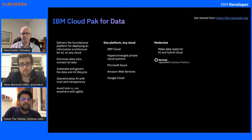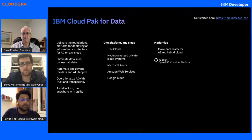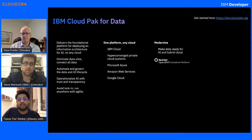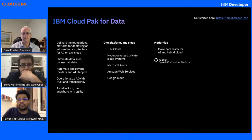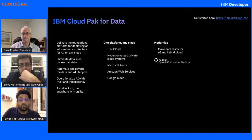Let's get started with Cloud Pak for Data. Basically, it's your hub for all your data science needs. It delivers the foundational platform for deploying an information architecture for AI on any cloud — and by any cloud, we mean any cloud. It can run on multiple clouds, even on-premise. It eliminates the silos and connects all your data and all your data lakes together on one platform. It could be IBM Cloud, Hyperconverged Private Cloud Systems, Microsoft Azure, Amazon Web Services, or Google Cloud. It runs on top of Red Hat OpenShift, and that's how it's actually able to run on any cloud.